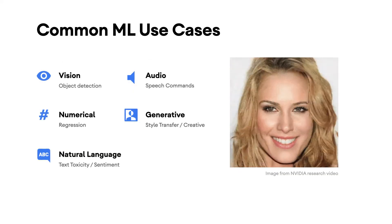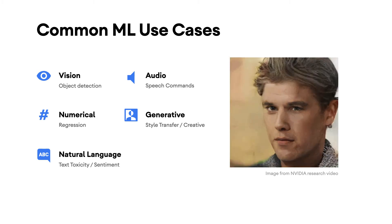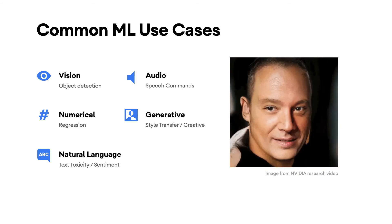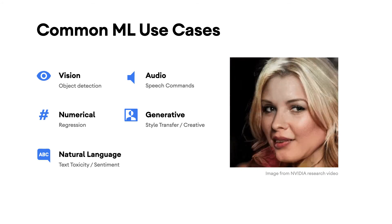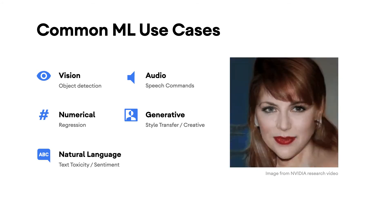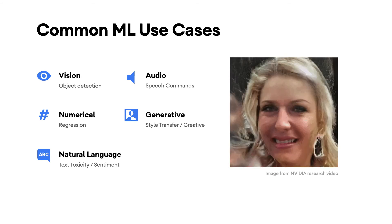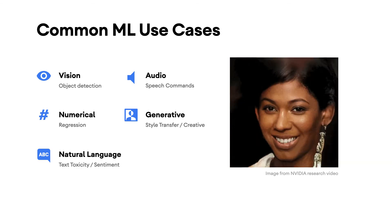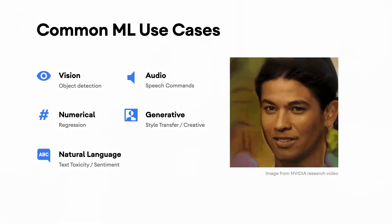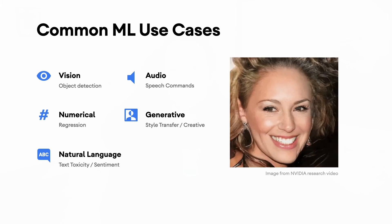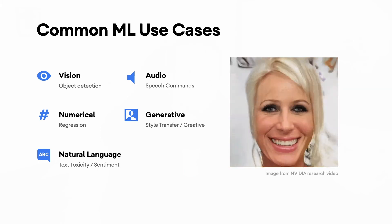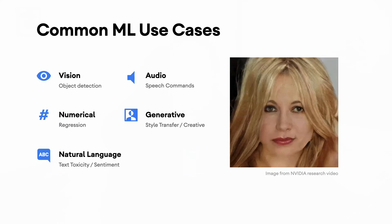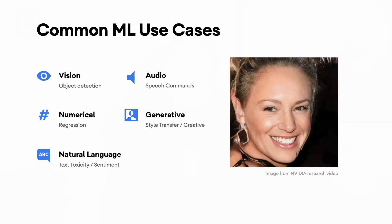There are many common use cases for machine learning beyond text, such as object detection to know what exists in an image, or numerical regressions to predict an output number based on an input — for example, if a house is 1,000 square feet, what would its price be? Natural language processing allows us to understand sentences and words, enabling us to mark if a blog comment is toxic, positive, negative, or neutral. And then we have audio for things like speech recognition, which is how your smart assistant or phone can understand your voice commands.